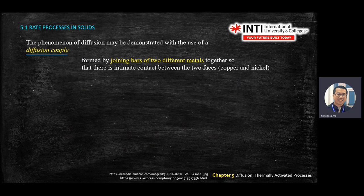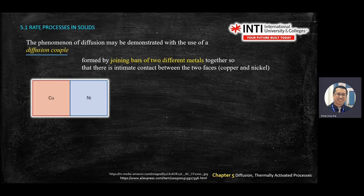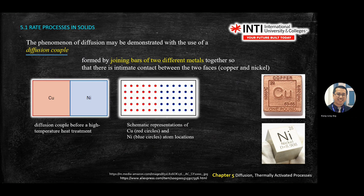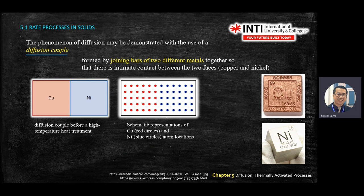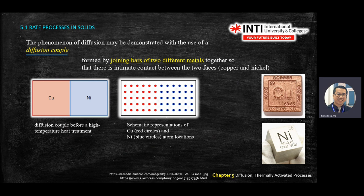We can demonstrate this phenomenon using a diffusion couple — couple means two solid bodies. We demonstrate using copper and nickel. At room temperature, in schematic presentation, red dots represent copper and blue dots represent nickel. At room temperature, the atoms will not move into each other — they are just touching the surface. This is the state before diffusion happens.